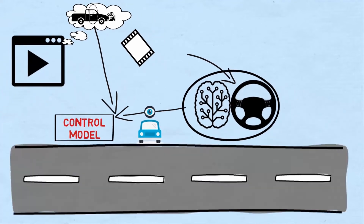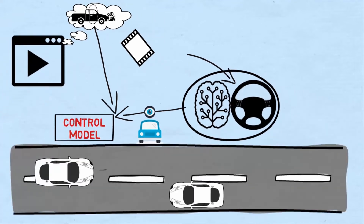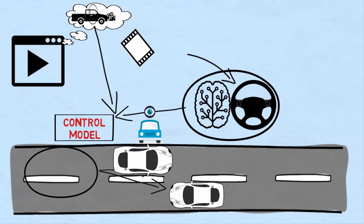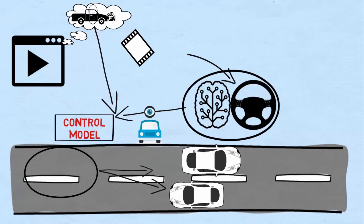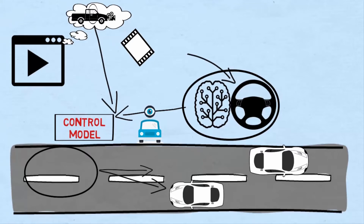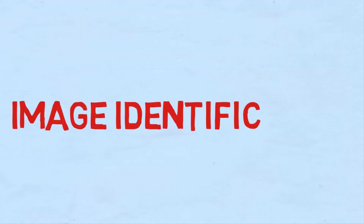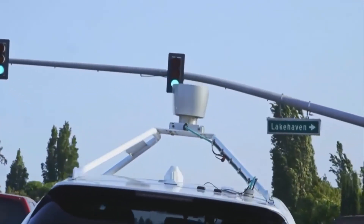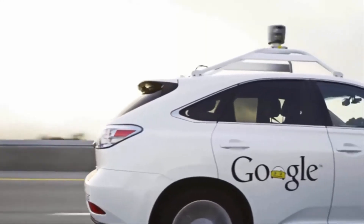The simulator records the off-center distance and distance traveled by the car. When the off-center distance exceeds a certain unit, a virtual human intervention is triggered and the position of the vehicle is reoriented to the default place according to the frame of the test video.